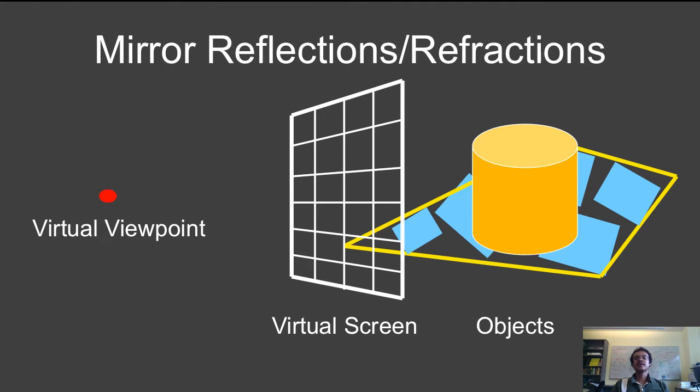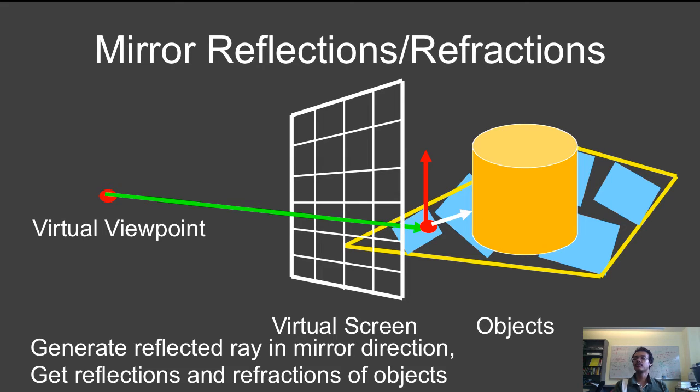The next component deals with mirror reflections and refractions. Same diagram again. This time, I'm going to shoot a ray in the mirror direction. Same thing for refractions. I'll shoot a ray according to Snell's law. And where that ray hits, I will get the color of that point, and this will give me my reflection. So ray tracing in a very simple way is able to handle shadows and reflections.